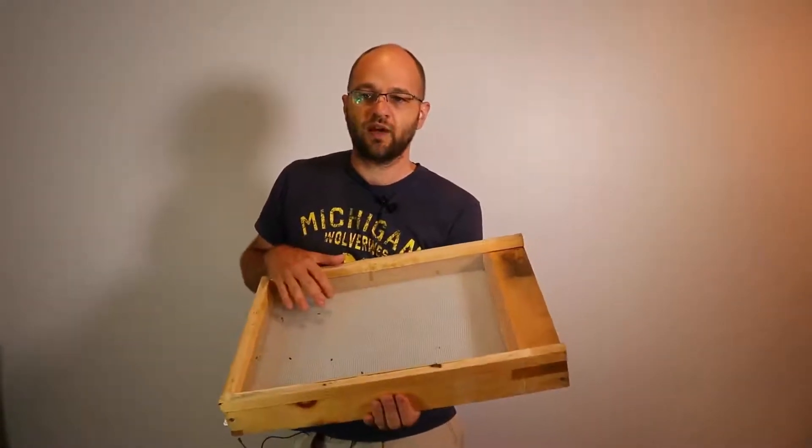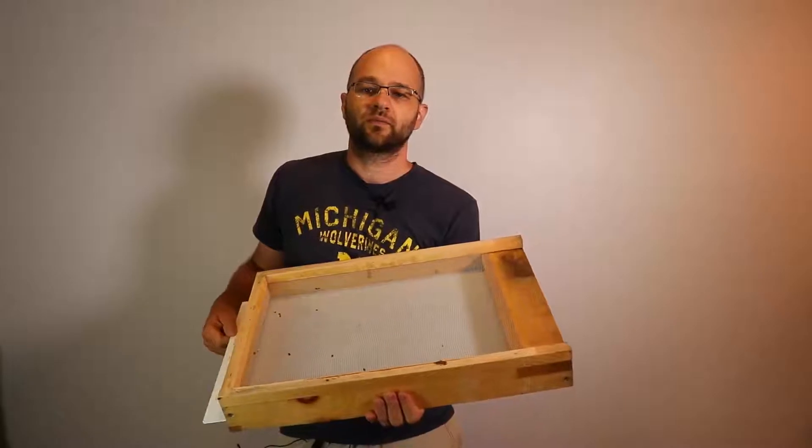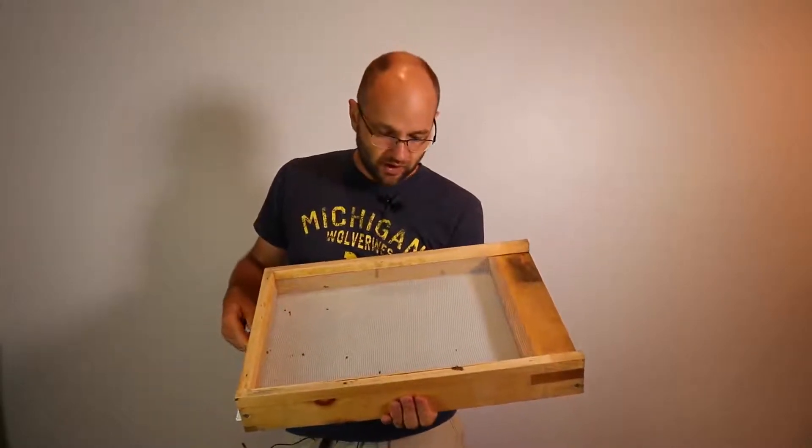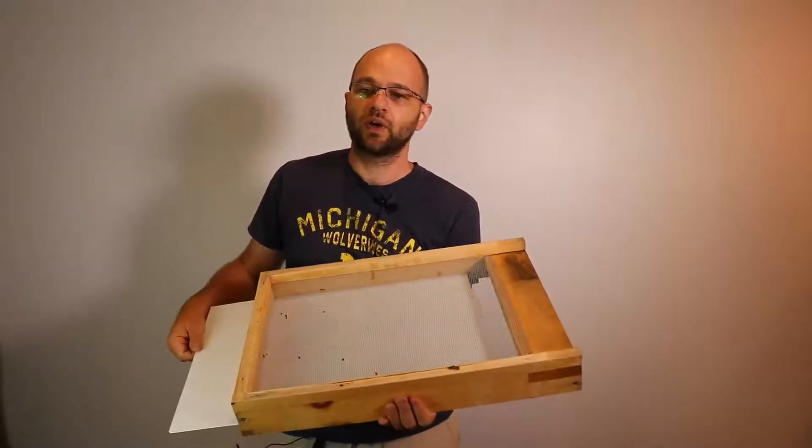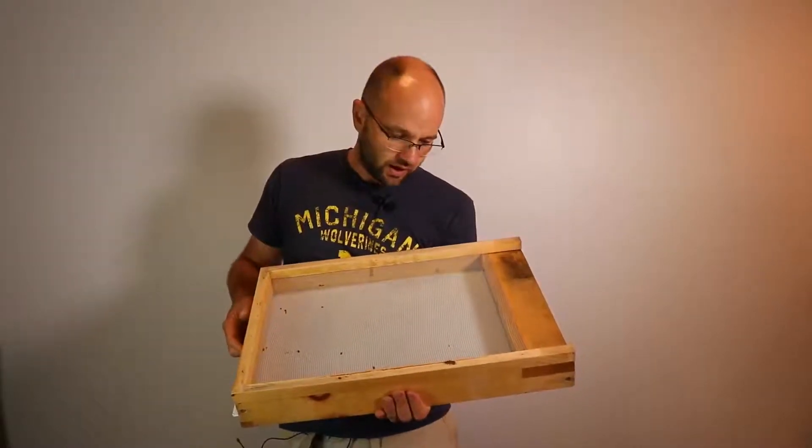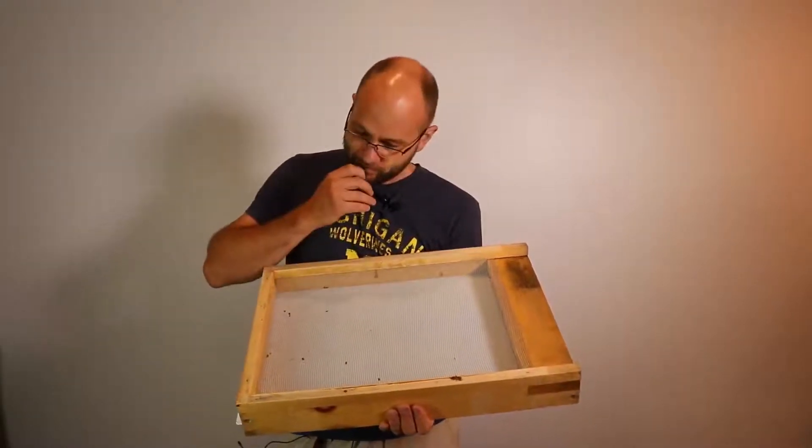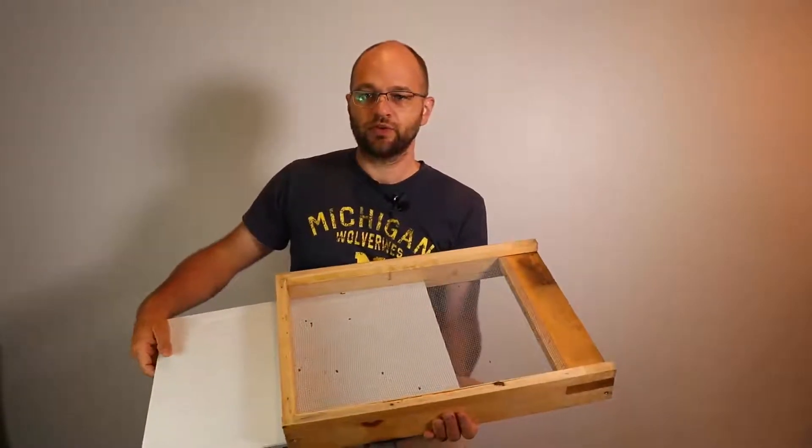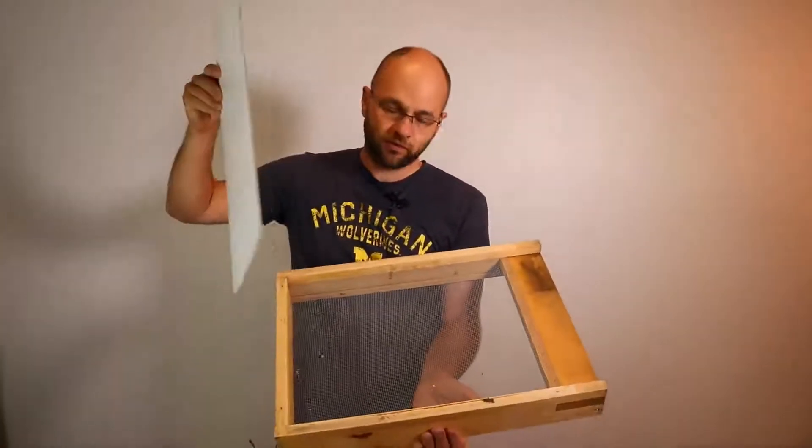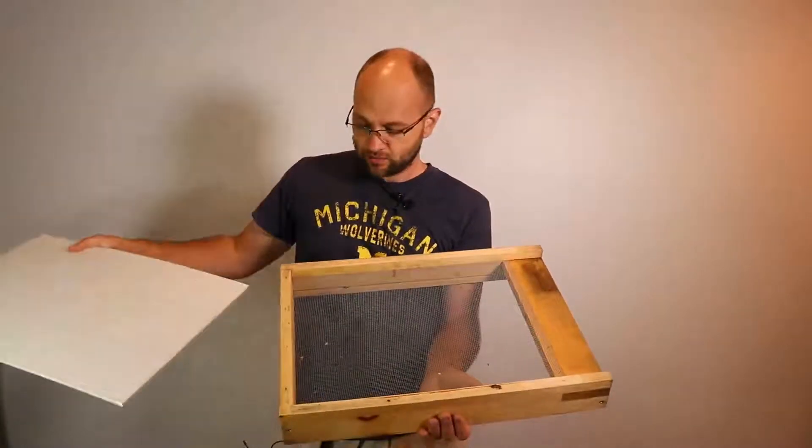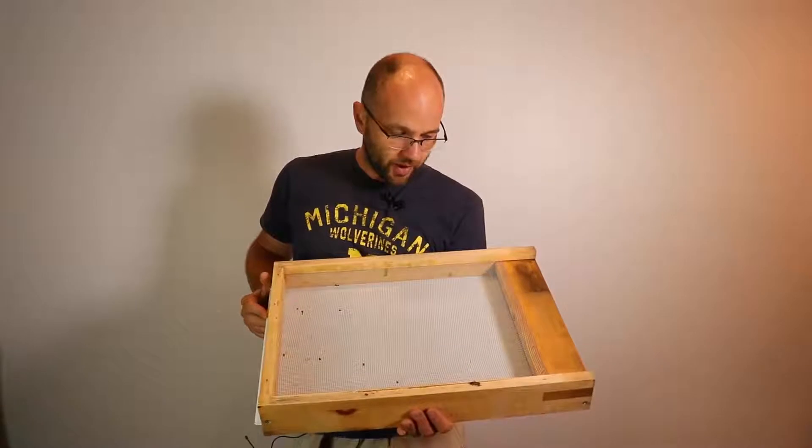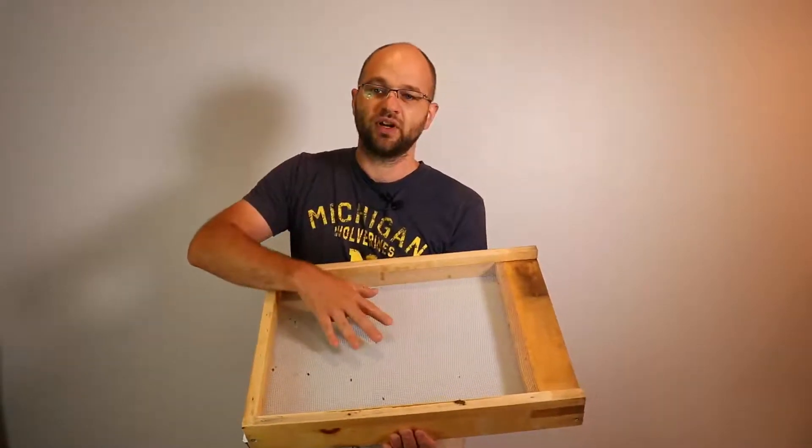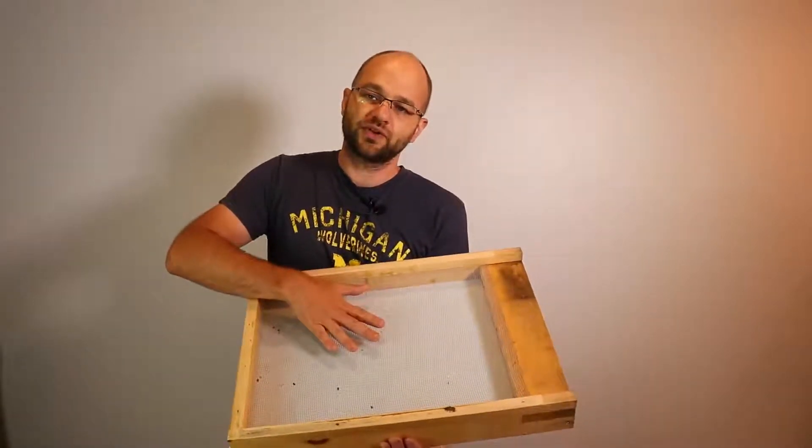Another reason to have this is for doing mite counts. Based on how many are falling on the bottom, you can pull this out and count every week. And a lot of times, it's helpful to dump everything from the screen bottom board, scrape it into a container, put some alcohol in there, shake it up, kind of separate the mites from everything else because there's going to be a lot of debris from the hive that falls to the bottom.